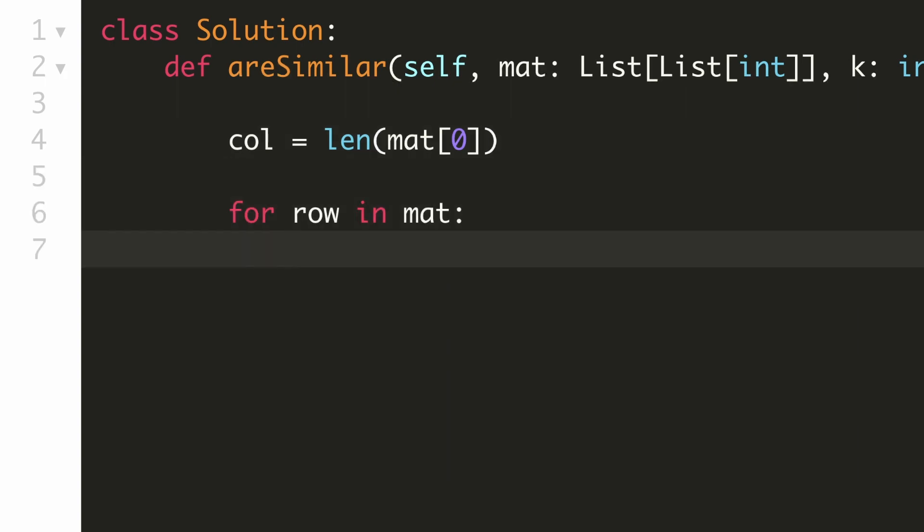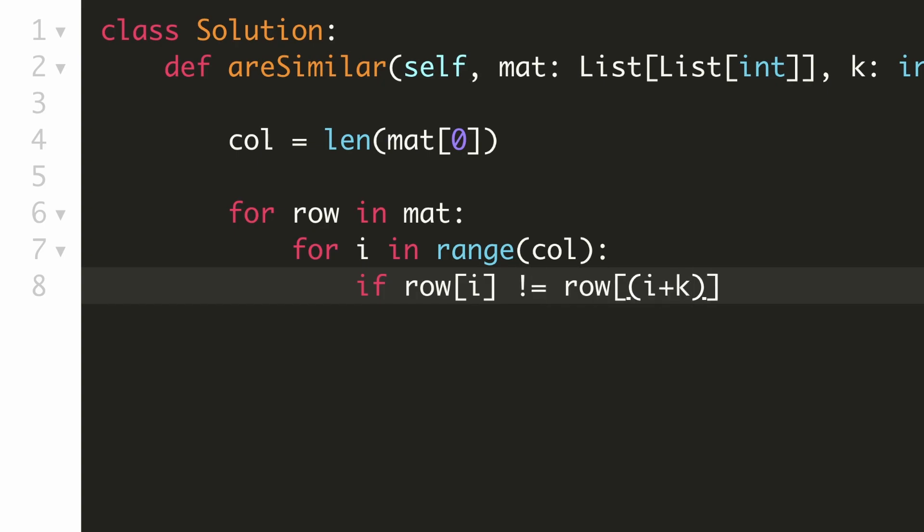Since the rotations have to be made in the row we'll go through each row in the matrix and for each column in that row we'll compare it with the kth element on the right. For handling the rotation we'll add k and then modulo it by the number of columns. And if they are not equal then we can immediately return false.